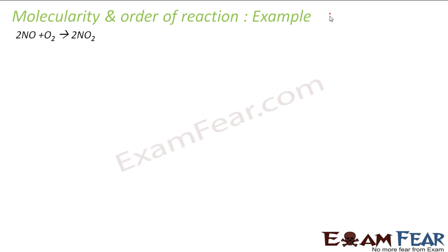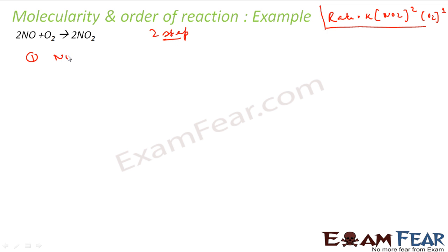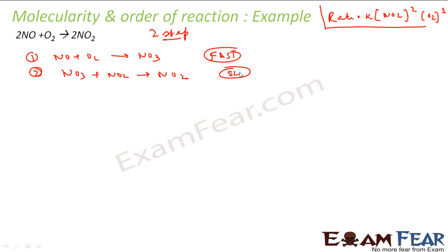Let's take another example: NO + O2 → 2NO2. Experimentally: rate = k[NO]^2 [O2]^1. This is again a complex, two-step reaction. First step: NO + O2 → NO3 (slow). Second step: NO3 + NO → 2NO2 (fast). Since this is my slow step, I can say the rate = k[NO][O2] — wait, actually rate = k[NO3][NO].